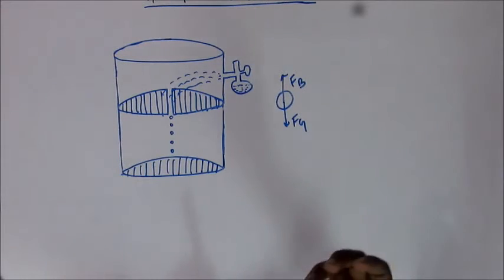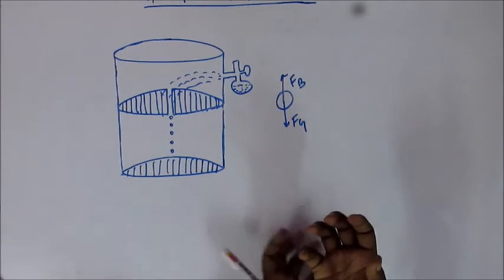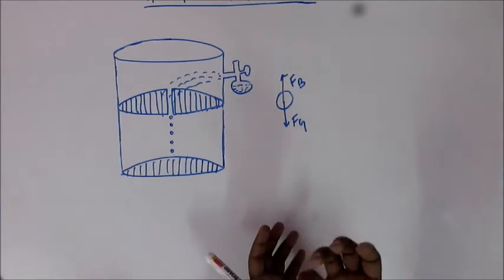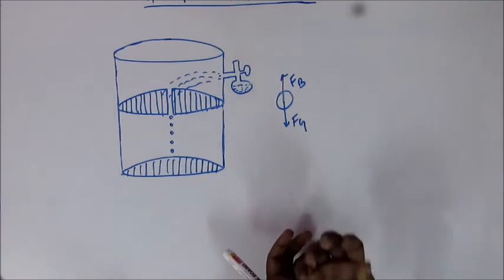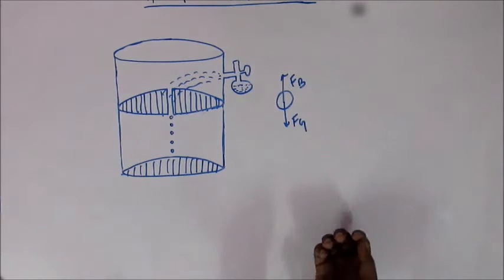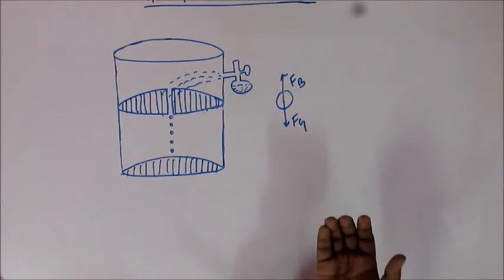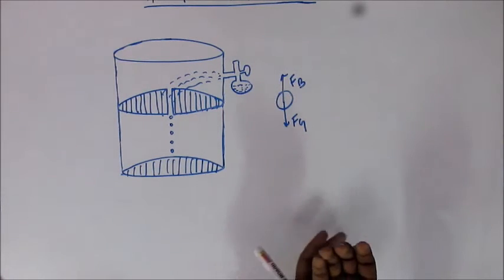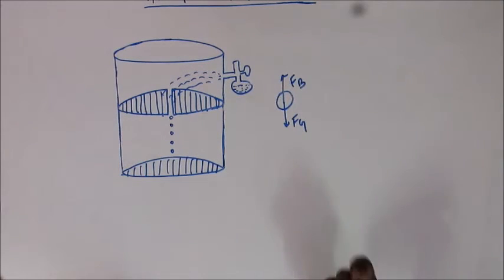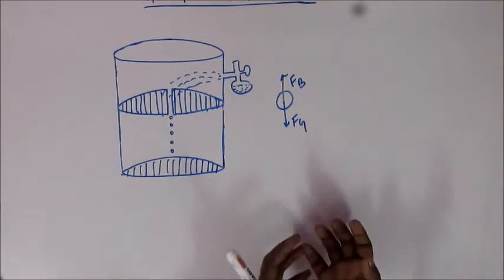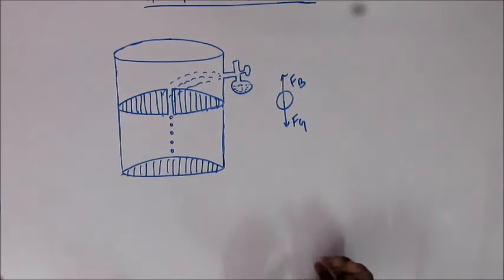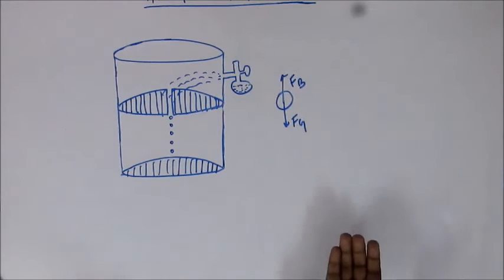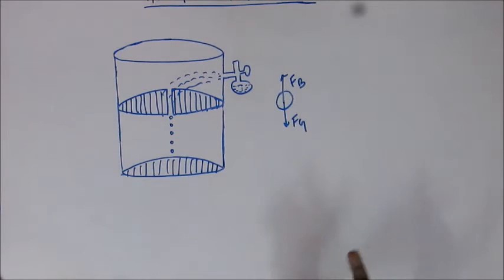There is a third force acting on the oil drop: the drag force. As the oil comes down, it pushes the air molecules beneath it, colliding with them. In turn, the air molecules exert a force on the oil, creating hindrance in its downward journey. It is a kind of frictional force. Due to the collision of the oil drop with air molecules, there is a force acting upward that hinders the downward journey — this is called the drag force.